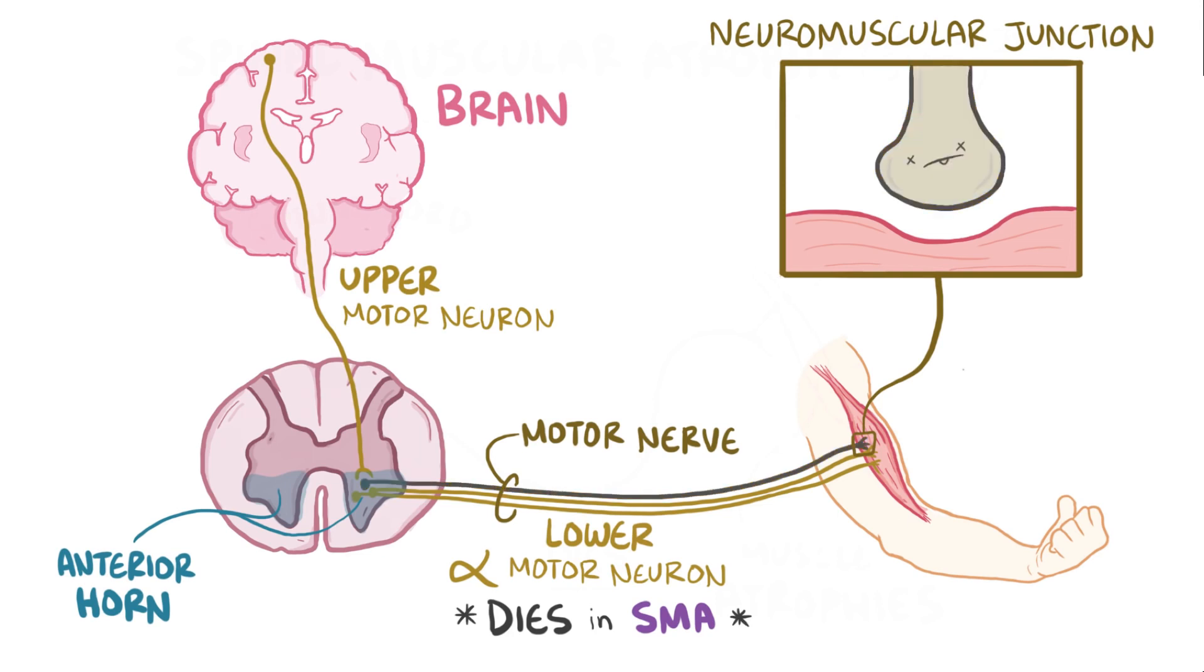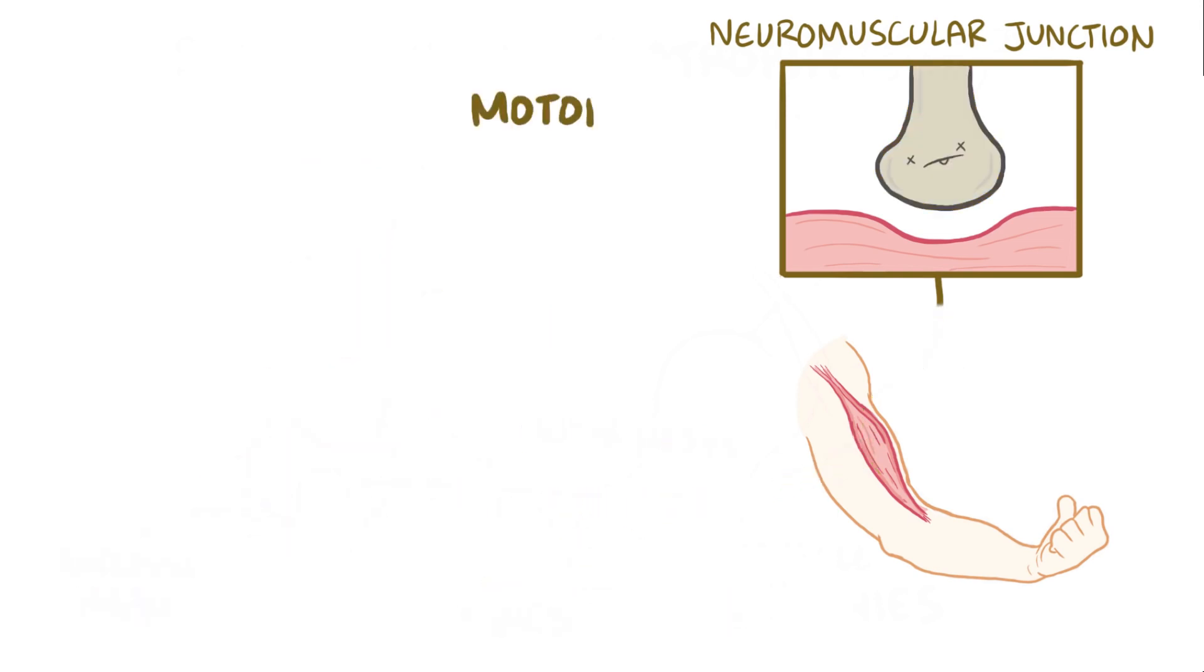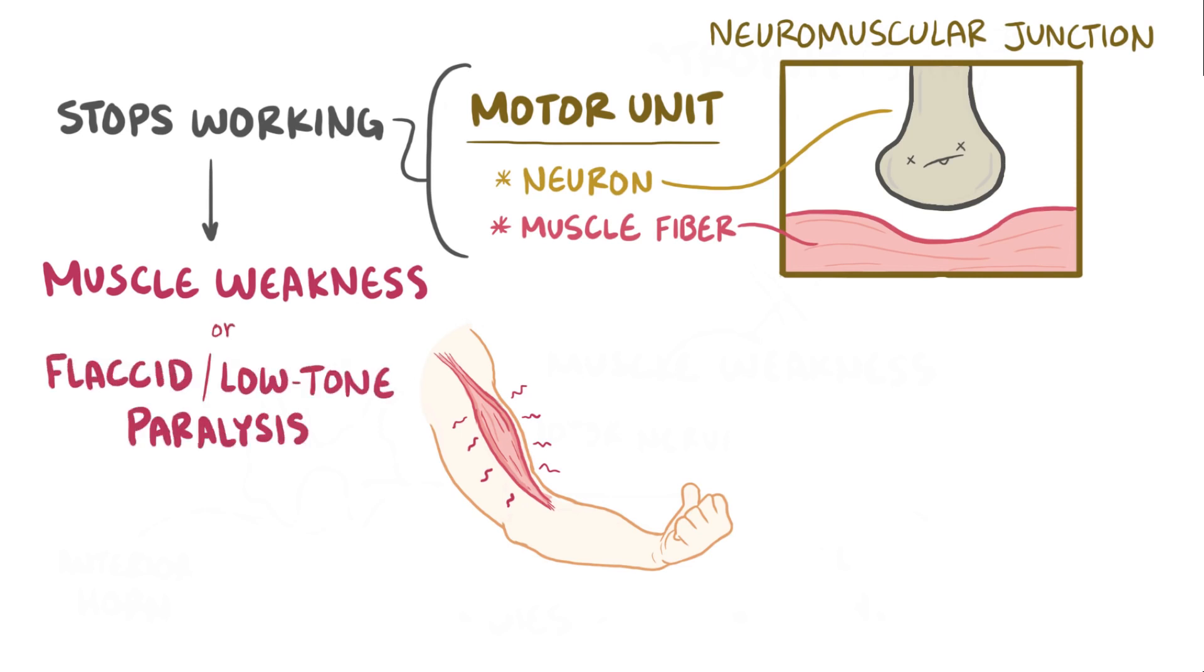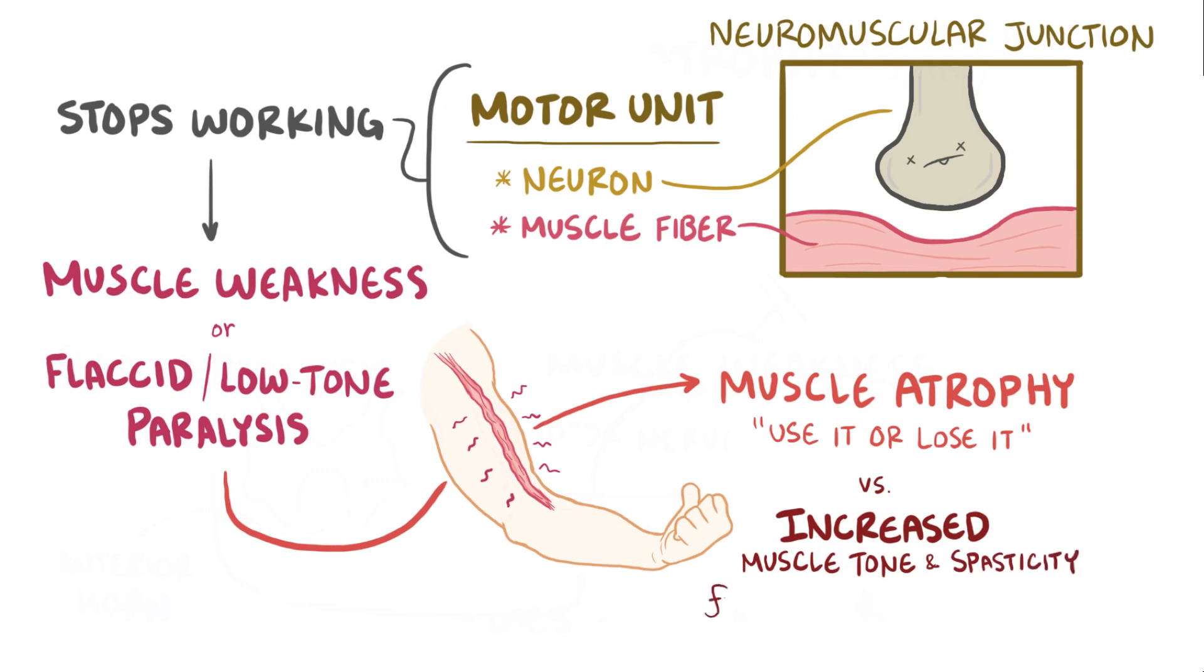If a lower motor neuron dies or if the entire nerve is injured, the motor unit, which includes the neuron and the muscle fibers it innervates, stops working. Depending on how many muscle fibers stop contracting, there can be overall muscle weakness, or in an extreme situation, a flaccid or low tone paralysis. This denervated muscle also atrophies over time, a classic example of use it or lose it. This contrasts with the increased muscle tone and spasticity that develops after an upper motor neuron is damaged.